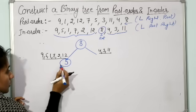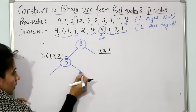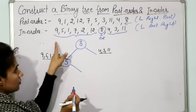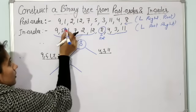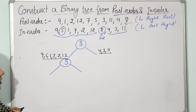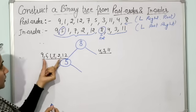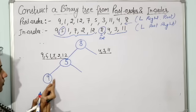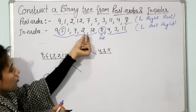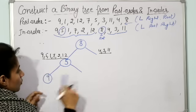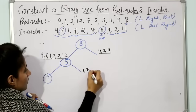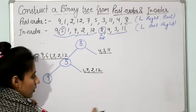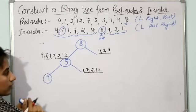Now find the left and right parts of 5. Go to the in-order traversal and locate 5. Out of these elements, 9 is to the left of 5, so 9 goes to the left of 5. And 1, 7, 2, and 12 are to the right of 5, so they form the right subtree of 5.